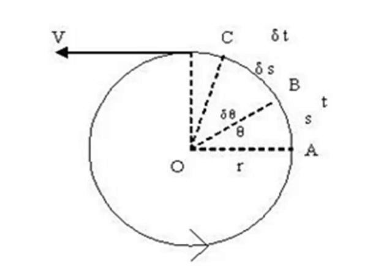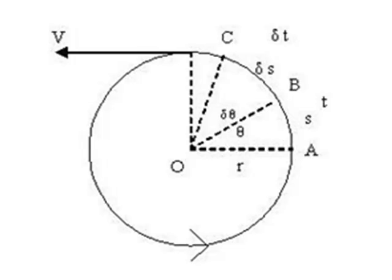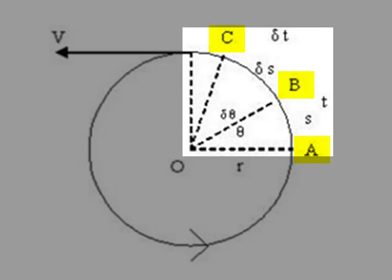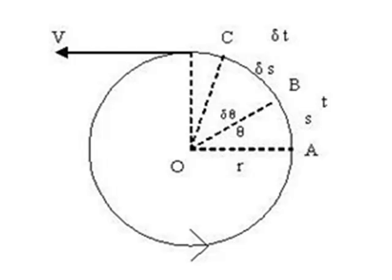In the figure, a body is shown moving along the circular path of center O and radius R. It is moving in anti-clockwise direction. A, B, C are the different positions of the body. At any time, the linear velocity of the body is directed tangential to the circular path or perpendicular to the radius.